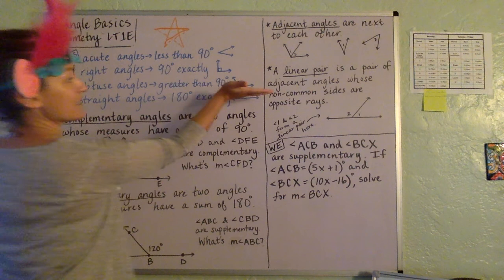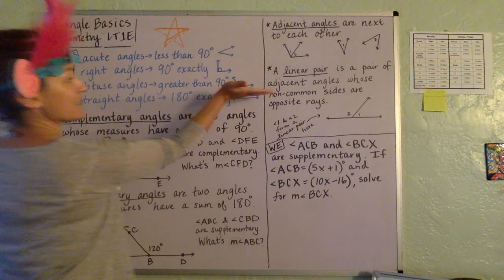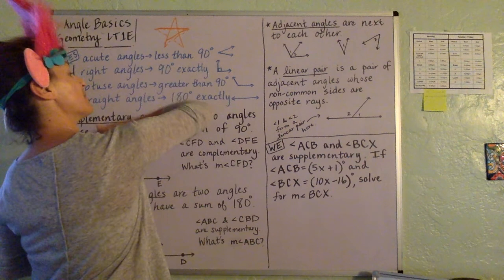Obtuse angles are greater than 90, so right kind of swings pretty wide. And then a straight angle is an angle that goes actually a full 180. And so here we go, complementary angles.